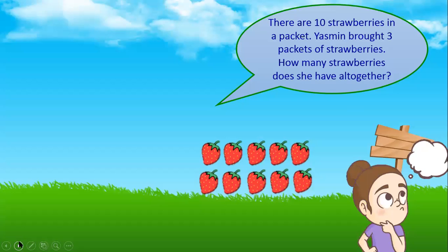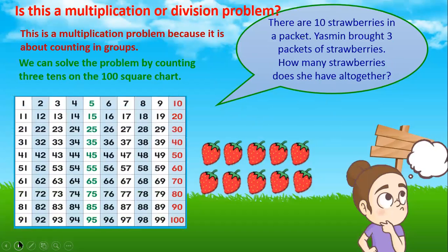There are 10 strawberries in a packet. Yasmin bought 3 packets of strawberries. How many strawberries does she have altogether? Is this a multiplication or division problem? This is a multiplication problem because it is about counting in groups. We can solve the problem by counting 3 tens on the 100 square chart.